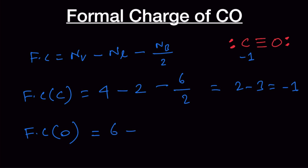For oxygen, the number of valence electrons is 6, minus 2 (one lone pair), minus 6 divided by 2 (three bonds), which equals 4 minus 3, equal to plus 1. So oxygen carries a plus 1 formal charge in carbon monoxide. The net charge is 0, with carbon at minus 1 and oxygen at plus 1.